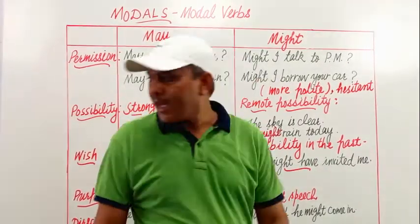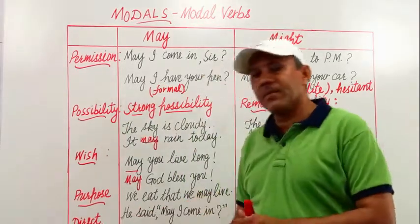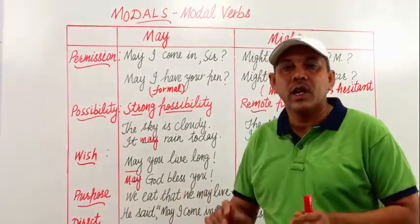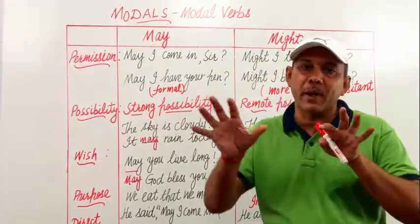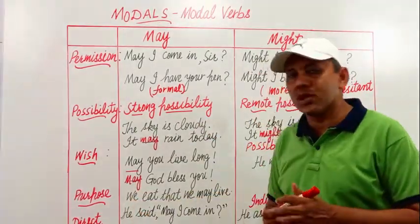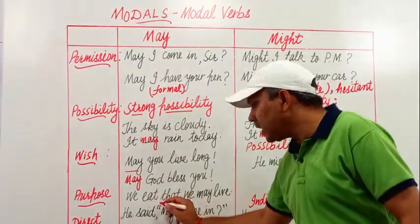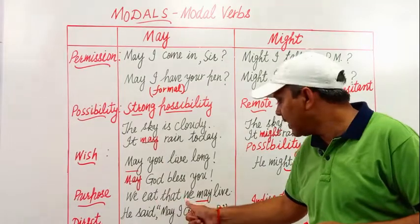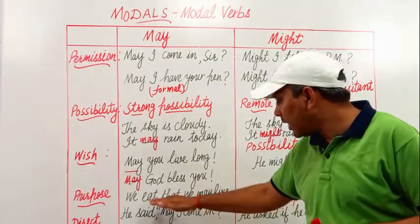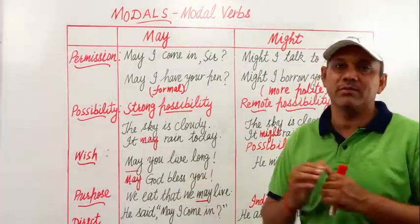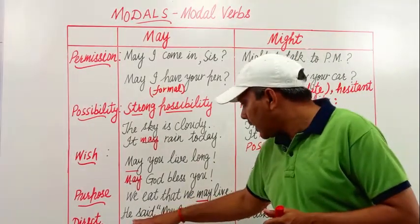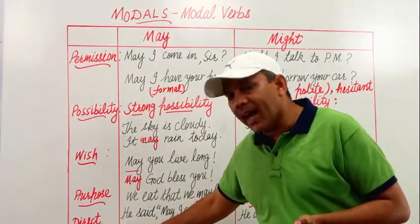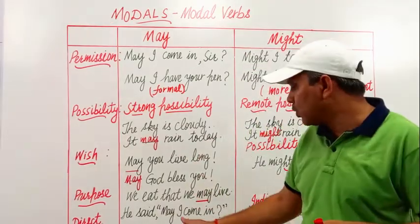Next is purpose. We use the modal verb 'may' to express a purpose — why we do something. For example: 'We eat that we may live.' Why do we eat? So that we may live. To express purpose, we use 'may,' and we do not use 'might' for purpose.